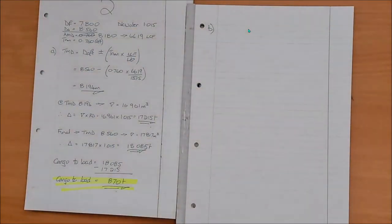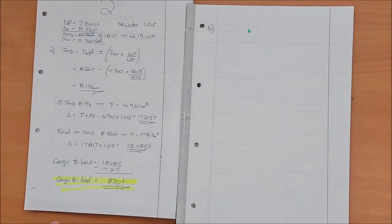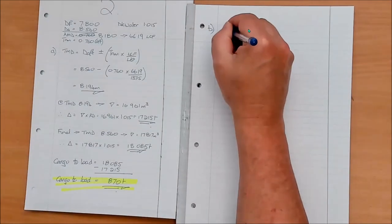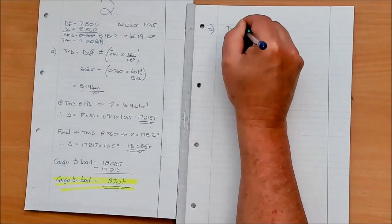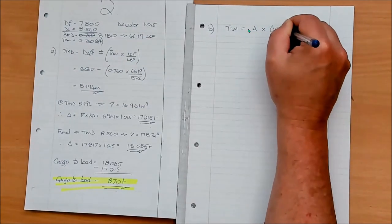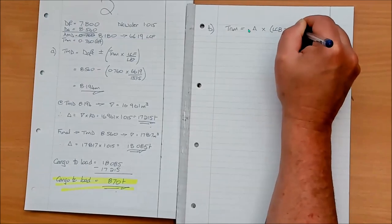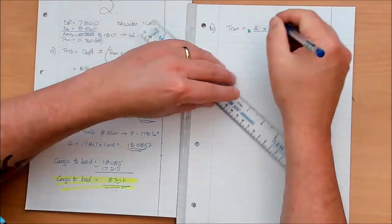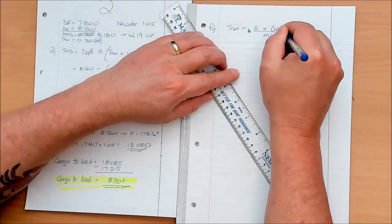So therefore, X represents how much to load in number one hatch. 870 minus X is how much to load in number five, and that will give us our final condition. Well, we know the final displacement, 18,085, and because we're even keel, we know LCB equals LCG. So we can obtain that final LCG from the hydrostatics, which means quickly we can get the start and the end, and then we just solve for the middle.